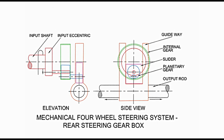Further rotation of the planetary gear takes the output rod towards the right from the middle position. This continues until the planetary gear has rotated through 270 degrees from the initial position and has attained the horizontal position. As the planetary gear rotates further, the output rod moves towards the left. As the planetary gear reaches the initial lowermost position in the internal gear, the output rod is back to the middle position.